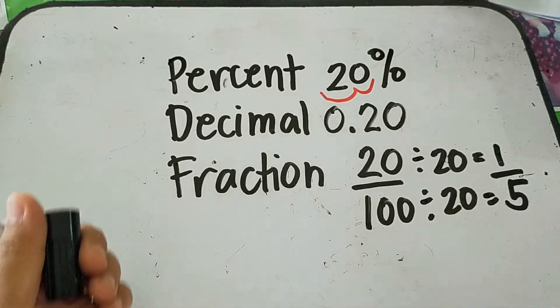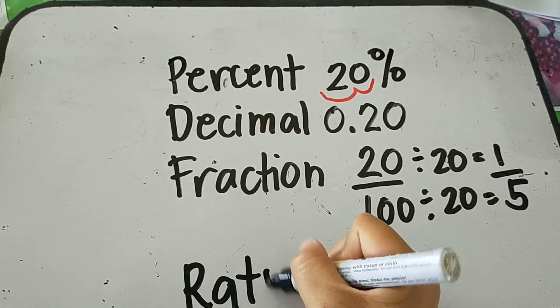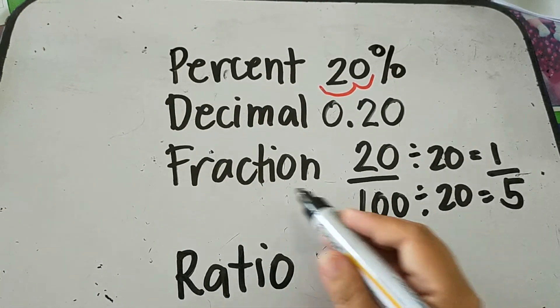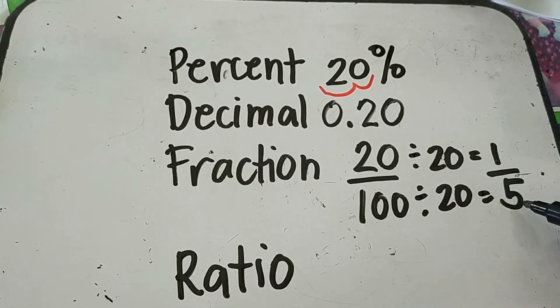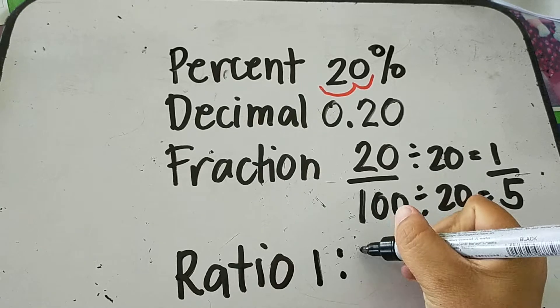Then the answer is 1/5. So how about in ratio form? So in ratio form, since that we already reduced the fraction form in lowest term, we'll just write this. So 1 is to 5.